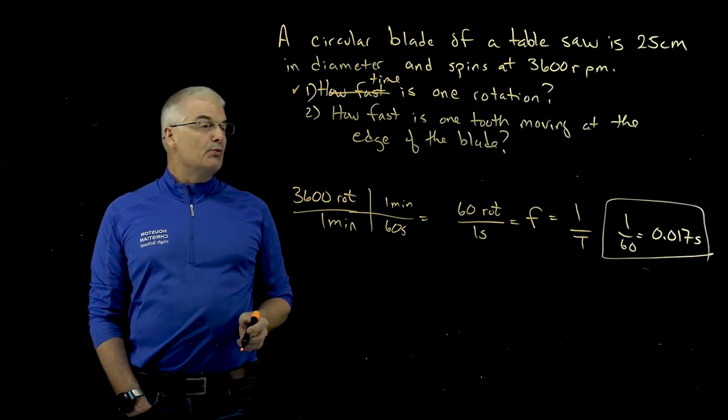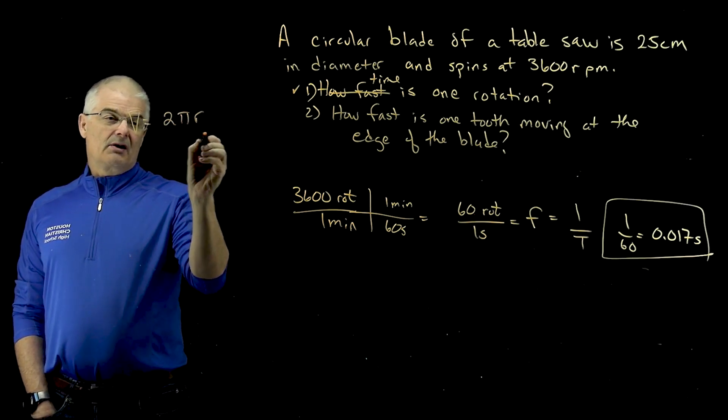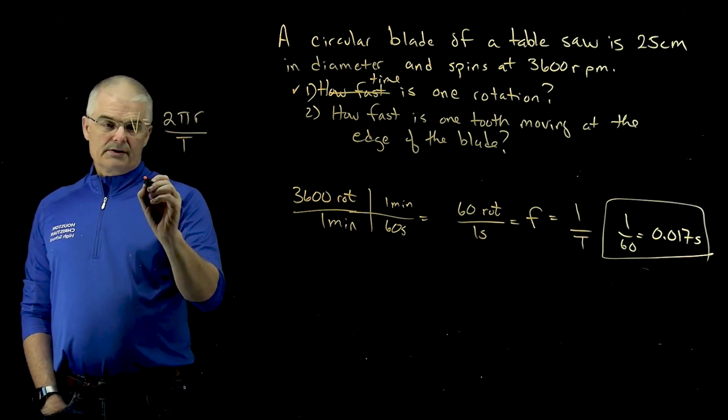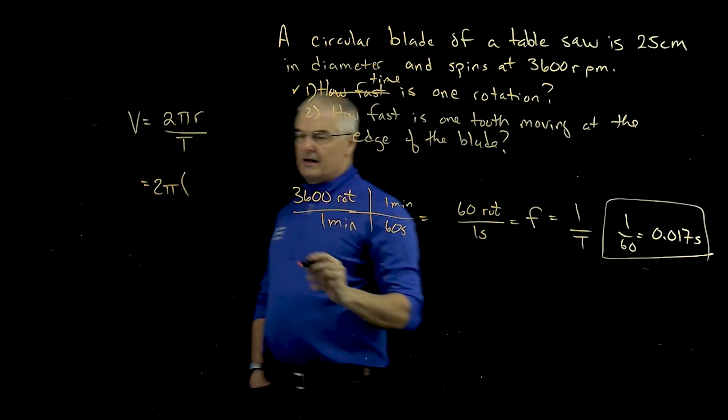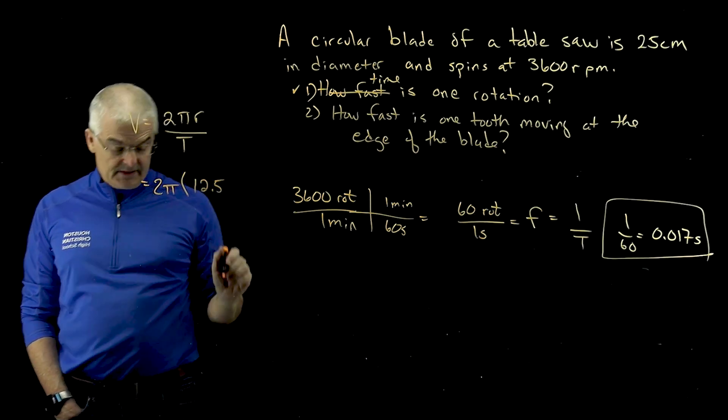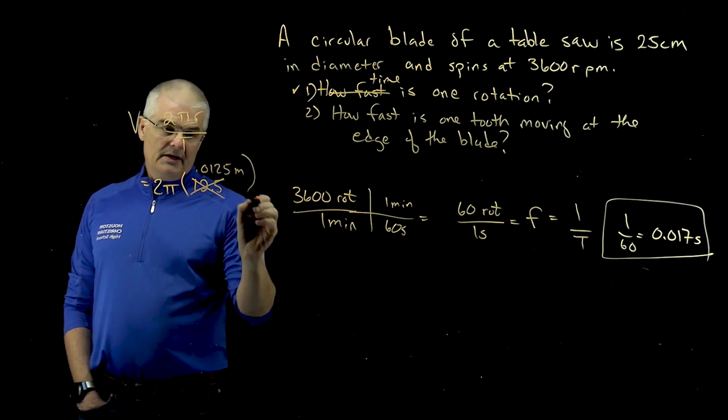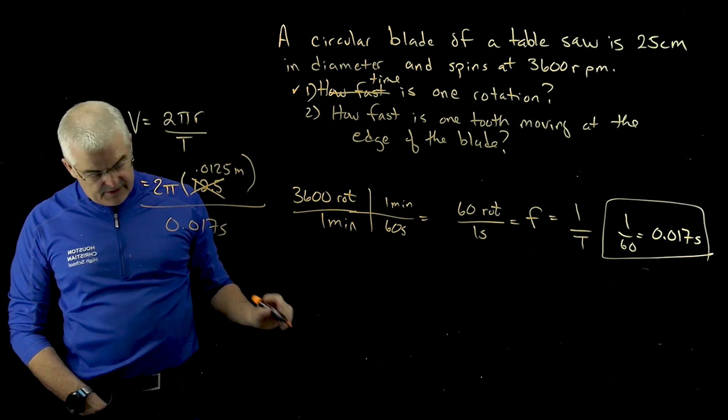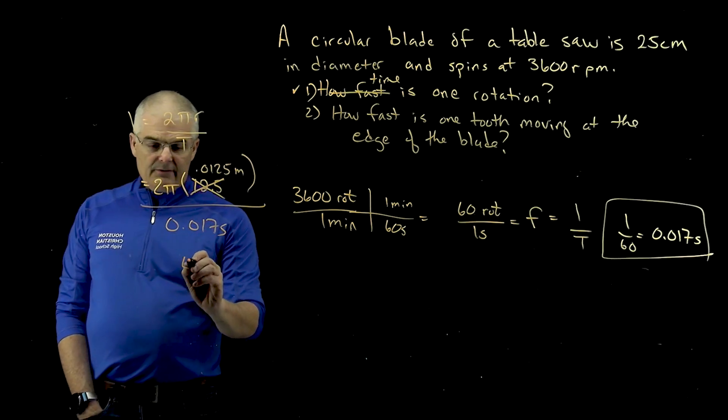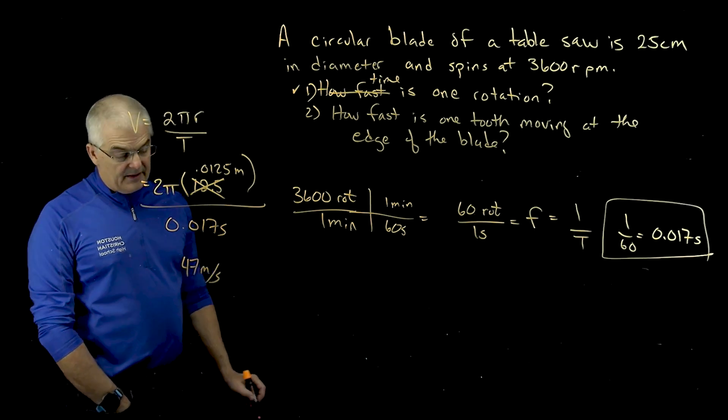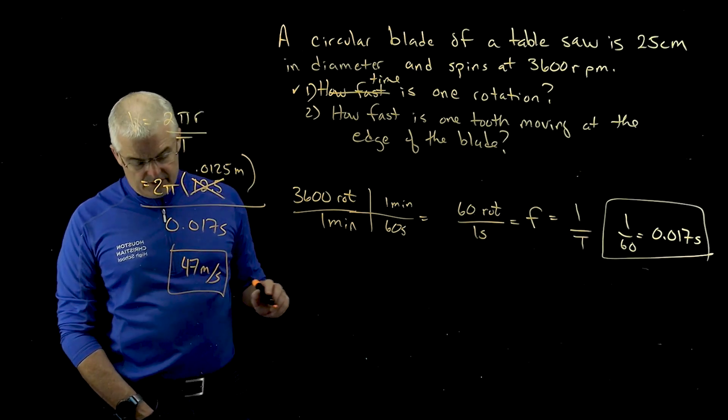For question two, how fast is one tooth moving at the edge of the blade? Remember, what is the equation for velocity? Velocity is 2πr over the period. We've got the 0.017. So we can say 2 times π times r. Now, warning, this is the diameter of the saw blade, 25. So this will be 12.5. Oh, and that's in centimeters. Check that. 0.0125 meters divided by 0.017 seconds. And when you do all that math, you get a very high speed. I get 47 meters per second. That's fast. 47 meters per second. Do not stick your finger in the edge of a saw blade. It's coming at 47 meters per second.